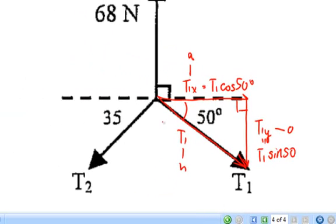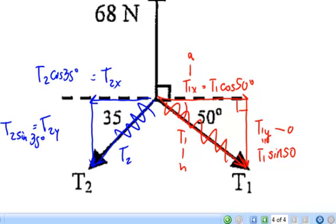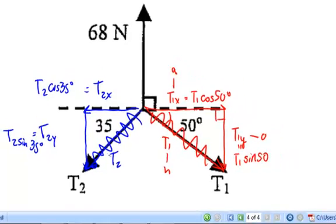And now, I can replace T1 with its components, T1x and T1y. I want to play the same game with T2, breaking it into its horizontal and vertical components. And now, I'm going to replace T2 with its horizontal and vertical parts.